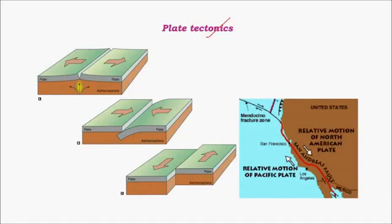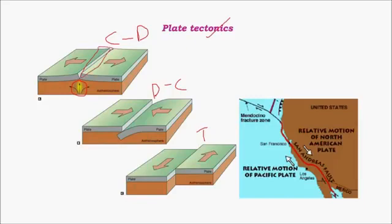Regarding plate tectonics, there are mainly three kinds of plate boundaries: the constructive or divergent edge, the destructive or convergent edge, and the transform edge. At the divergent edge, volcanic activities give rise to mid-oceanic ridges, and there will always be earthquakes with shallow focus.